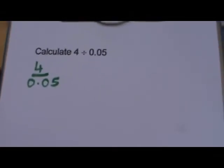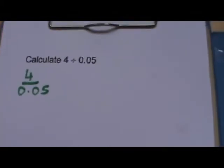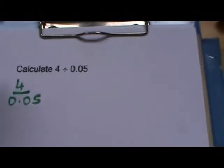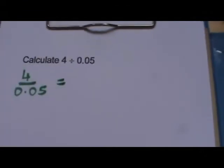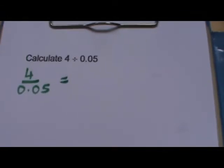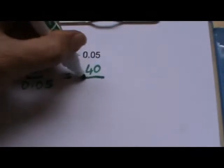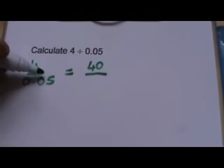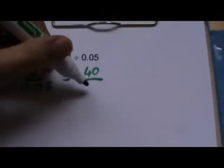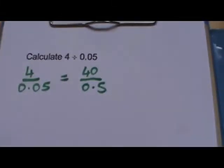So what we've got to do is to try and get rid of the decimals to make it a bit easier for ourselves. So we can think of some equivalent fractions to this fraction. Let's multiply both the numbers by 10. So 4 times 10 is 40. If we multiply 0.05 by 10, the point moves along one place. So it becomes 0.5.